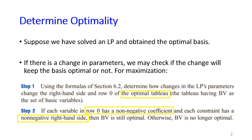Again, the step is actually the same. We need to have the optimal table first and then use the formula to see how the change affects the table. Especially, we check if each variable in row 0 still has a non-negative coefficient and then each constraint still has a non-negative right-hand side. If that is the case, then our current basis remains optimal.